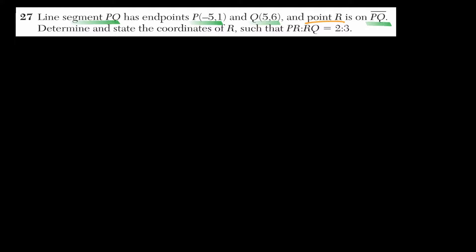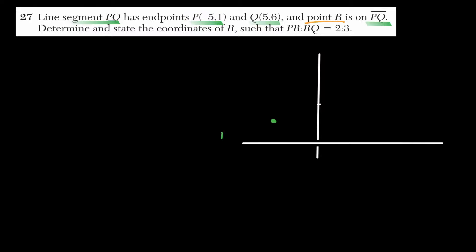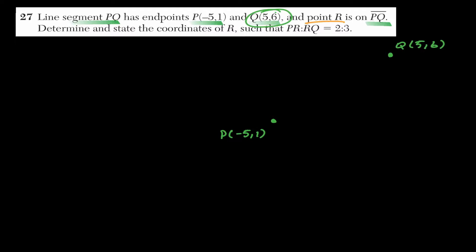In question 27, we have line segment PQ where P is at (−5, 1) and Q is at (5, 6). There is also a point R on this line segment. Let's start by drawing this — P at roughly (−5, 1) and Q somewhere in the first quadrant. Now let's connect those points to create the line segment, and R is just some point on this line.